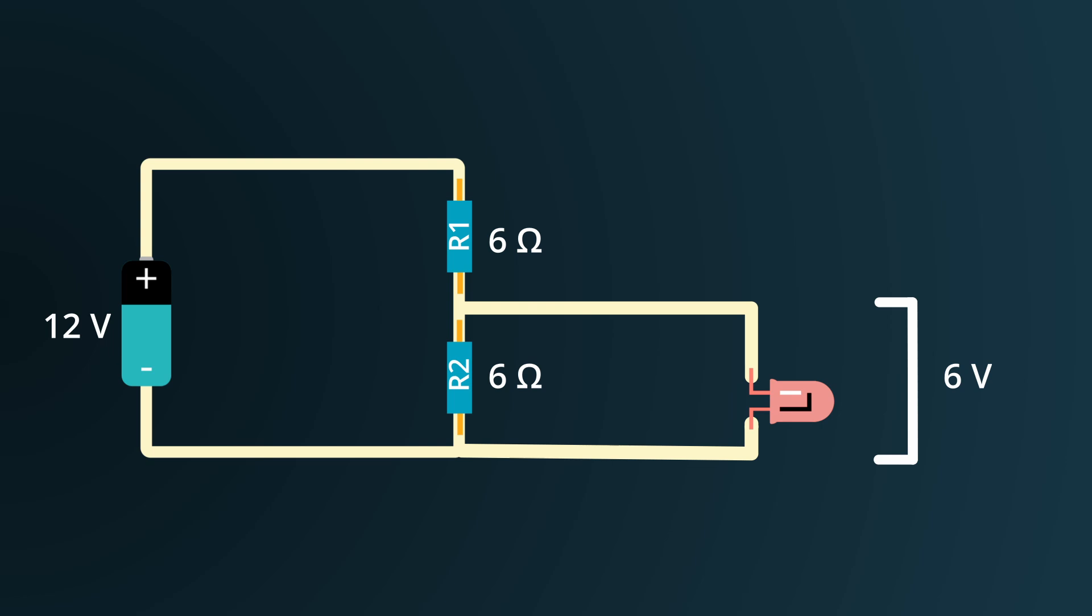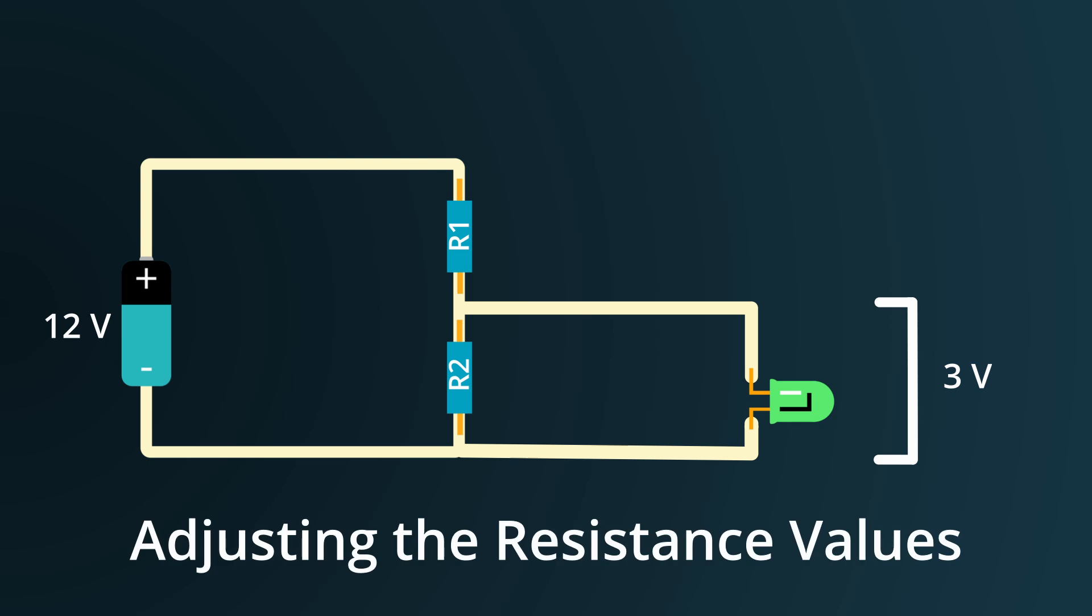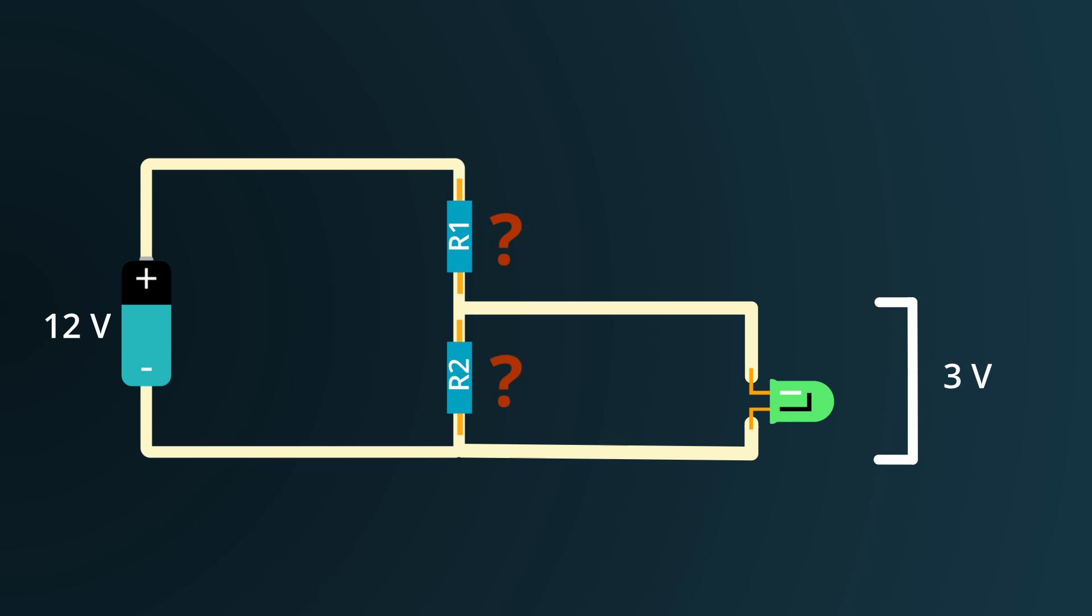Now, what if we don't want 6 volts? What if we want only 3 volts across the load, as was required by our LED? Well, as you might have guessed already, this is achievable by adjusting the resistance values of the resistors. You might think, let's just tweak the resistance values using Ohm's law until we get what we want. But it's not that direct and it is quite cumbersome.